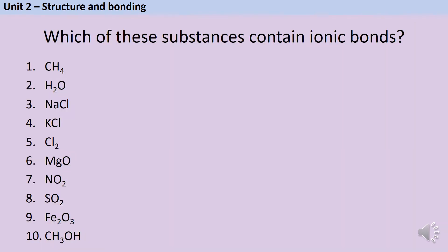Based on those parameters and maybe using a periodic table to help you, can you look at this list of substances and identify which of them contain ionic bonds? Pause the video now and write down some answers.